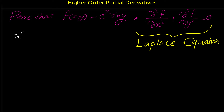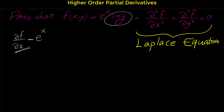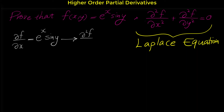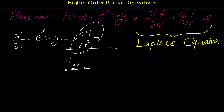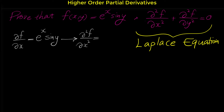First, we find the partial derivative of f with respect to x. The derivative of e to the x is e to the x, and since we take the derivative with respect to x, sine y is a constant coefficient, giving e to the x sine y. Taking the derivative of this again with respect to x gives us f sub xx. The derivative of e to the x is again e to the x times sine y.